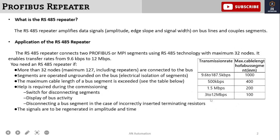Here is the tolerance level chart for better understanding. At 3 to 12 Mbps speed, 100 meters is the maximum cable length — after that you will have to put a repeater in the line. At 1.5 Mbps, the maximum is 200 meters; at 500 kbps, 400 meters; and at 9.6 to 187.5 kbps, up to 2000 meters cable length can be used.